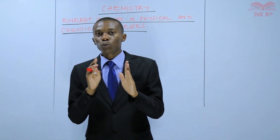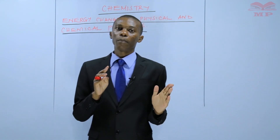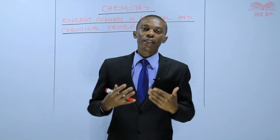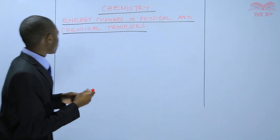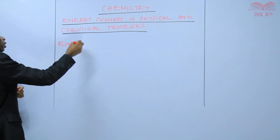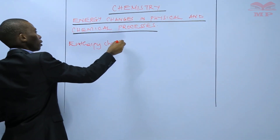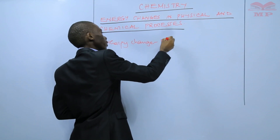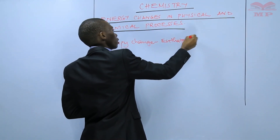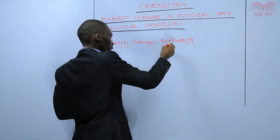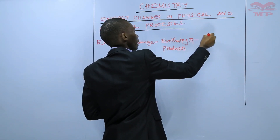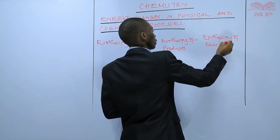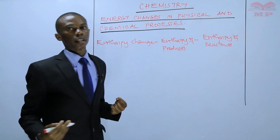We said that you cannot determine the enthalpy of a system, but you can determine the enthalpy change of a reaction. The enthalpy change is given by the enthalpy of products subtract the enthalpy of reactants. So that is what gives the enthalpy change.